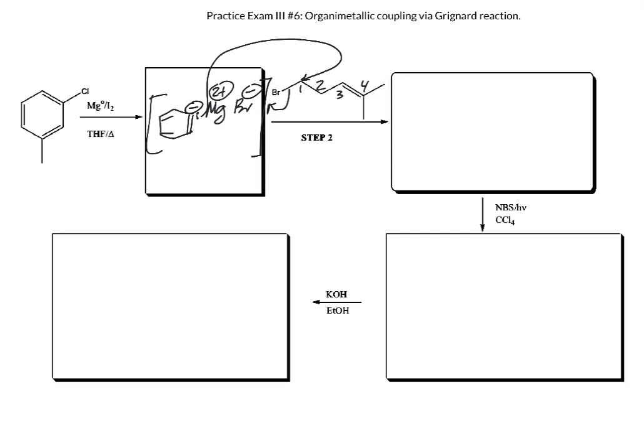And we're just numbering them for the purpose of keeping track of all of the atoms, not for the nomenclature purpose. In this example, the new bond will be between carbon of the Grignard reagent and carbon number one of the electrophile alkyl halide. Benzene ring. And then carbon number one, two, three, four, five.